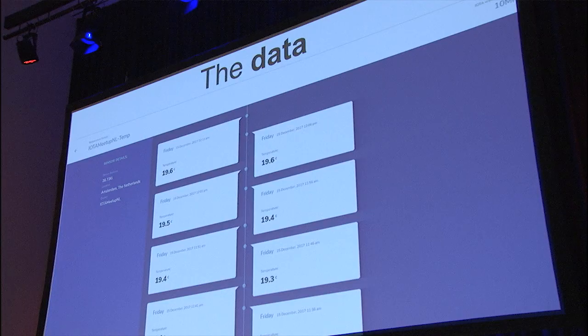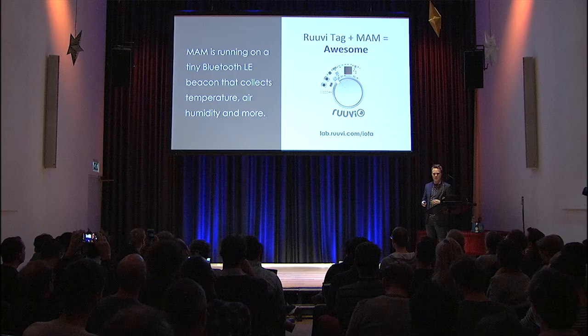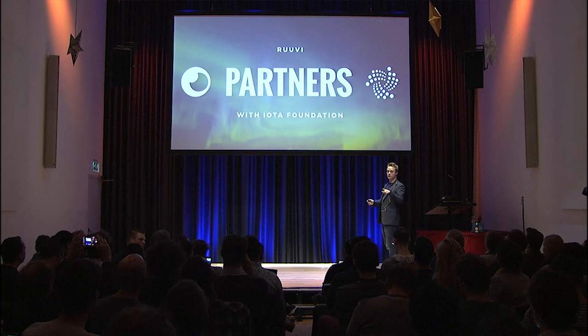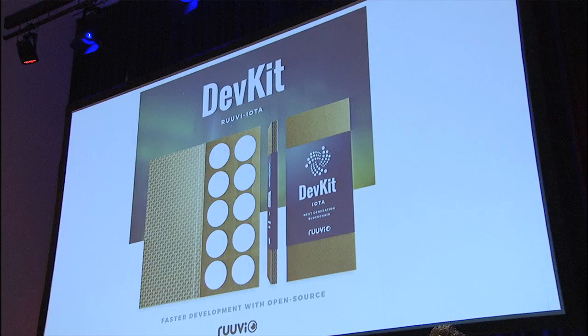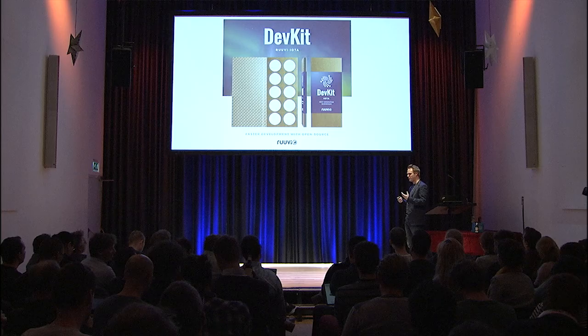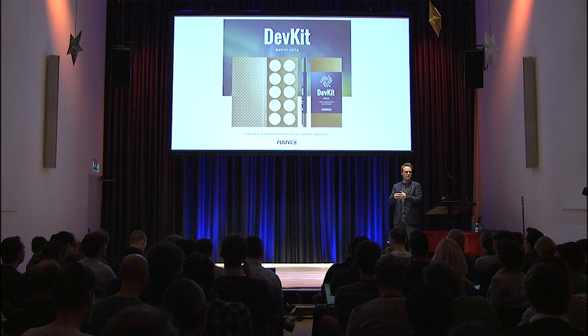Another cool thing is the Ruuvi tag — it uses MAM. It's an actual tag created by Ruuvi, and they are able to have different kinds of sensors put data onto the Tangle using MAM. And the coolest thing — and this is an announcement — Ruuvi is now partnering with the IOTA Foundation, so they are partners and will work together to build a dev kit for allowing sensors to send data to the network. I think the blog post is released around my talk. This shows that IOTA is looking for real practical implementations — it's not just a cryptocurrency. It's real use cases with real sensors developed to do these kinds of things and put data on the Tangle.